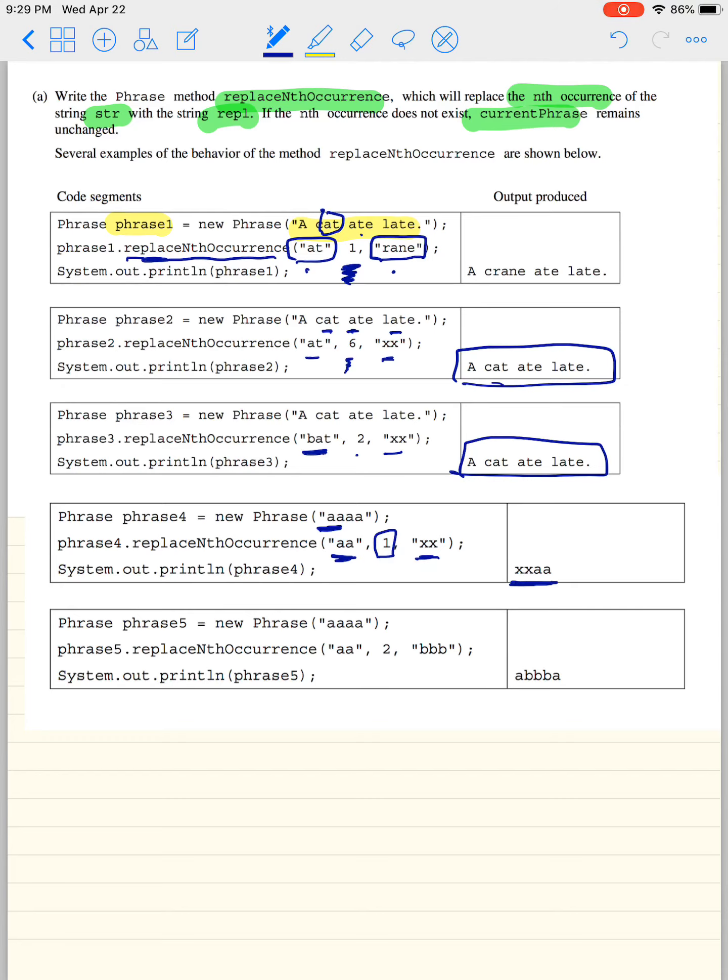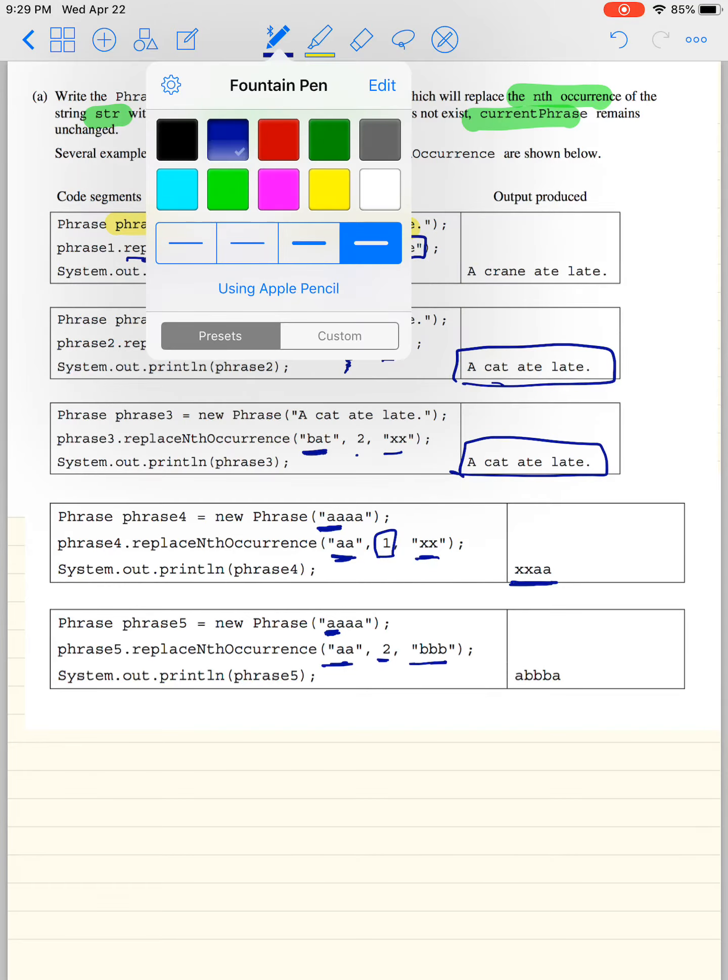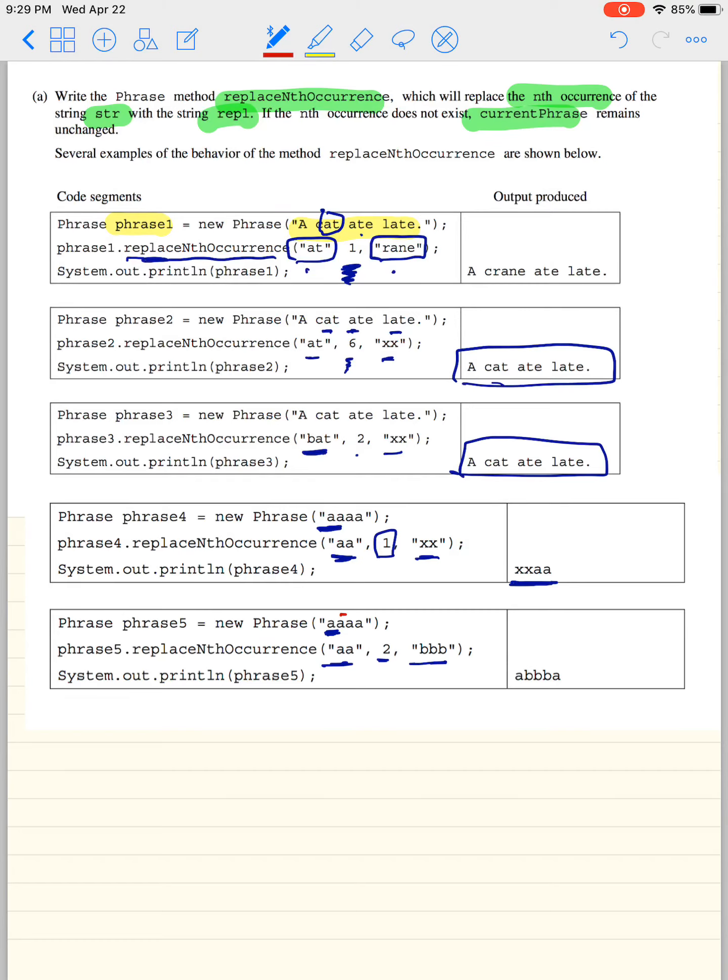And finally, this here says replace AA with BBB the second time you see AA. So this is the first time you see AA. And then let me just grab a different color. The second time you see AA is right there. So we have A, BBB, A.